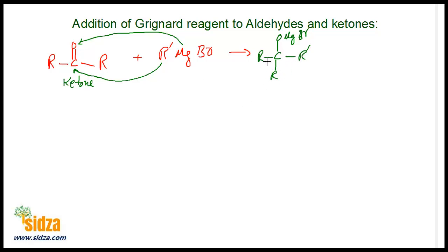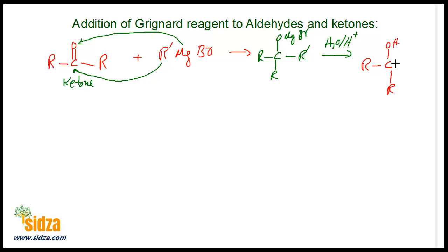So now there are three alkyl groups attached to the carbon and you have MgBr on oxygen. When you hydrolyze this compound, hydrogen is attached to the oxygen and the magnesium is attached with the hydroxide. So you get R-C(OH)(R)(R') — a tertiary alcohol. So from ketones you will get a tertiary alcohol.